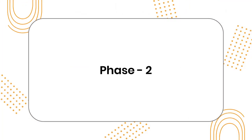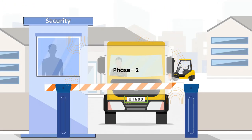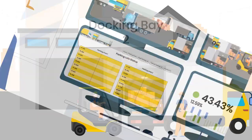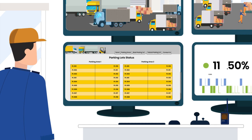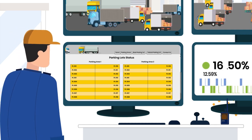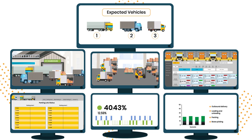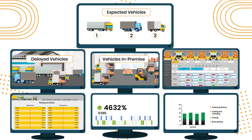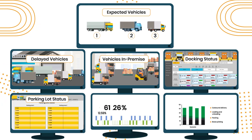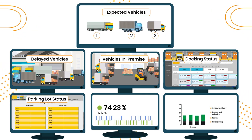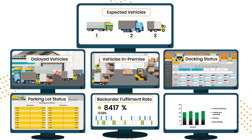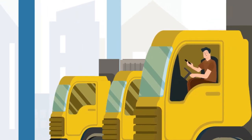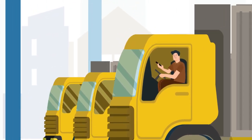In phase 2, John implements functions like automatic capturing of vehicle registration number using a license plate reader. Vehicle visualization screens for expected vehicles, delayed vehicles, vehicles in premise, dock status, parking lot status, and back-order fulfillment rate vehicle-wise.